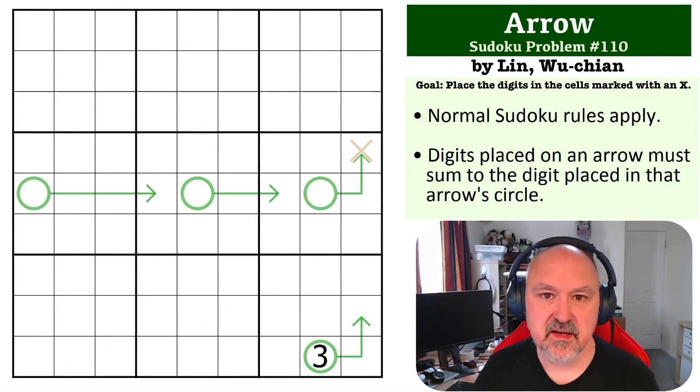Hey everyone, this is Bremster, and this is number 110 in the Sudoku Problems series. This is an arrow problem submitted by Wuchen Lin.